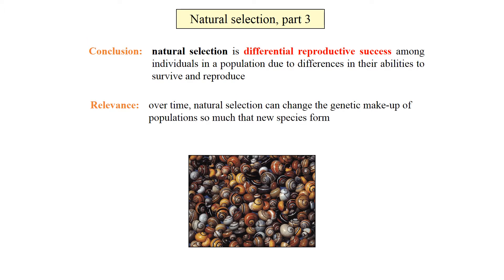We start out by talking about natural selection, which we define as differential reproductive success among individuals in the population due to differences in their abilities to survive and reproduce. So some organisms have more offspring, some have fewer. Why?